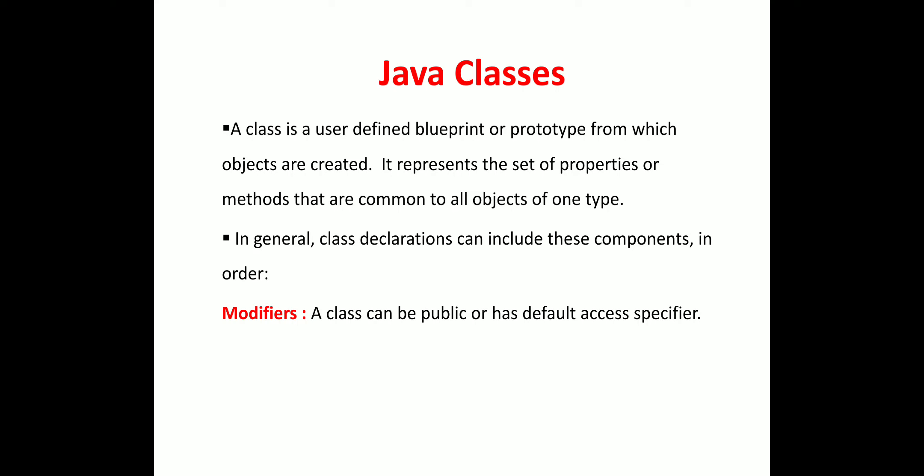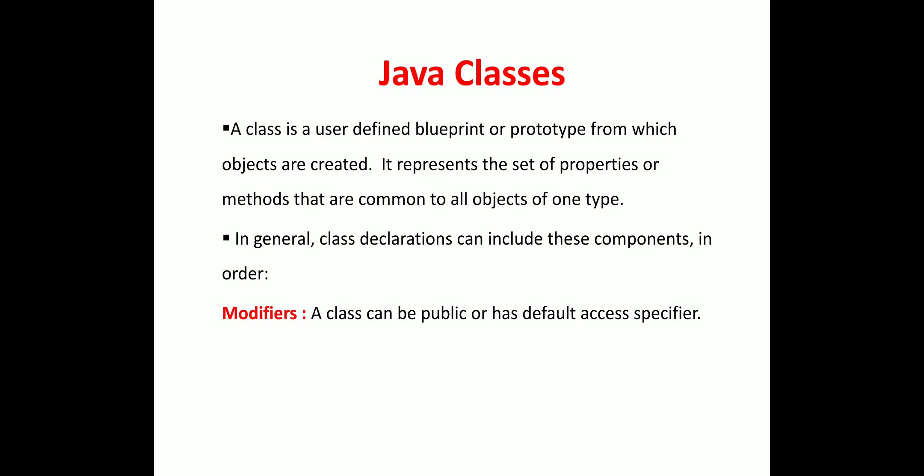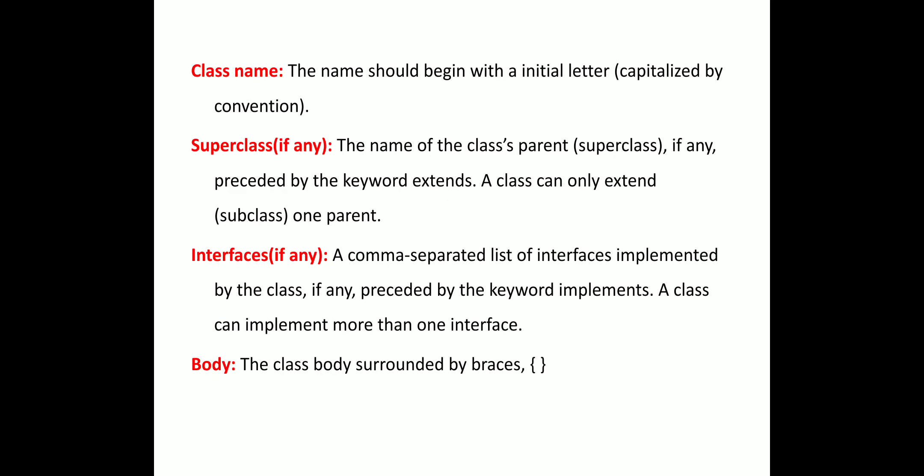A class declaration can include the following components. The first one is a modifier — a class can be public or have a default access specifier. The second one is the class name. The name should begin with an initial capital letter.